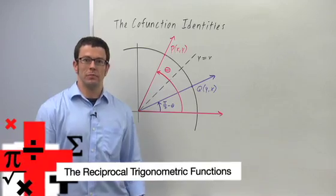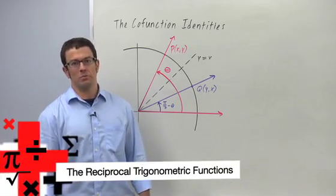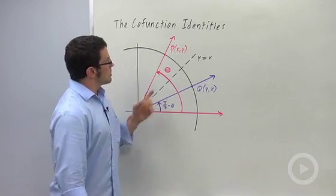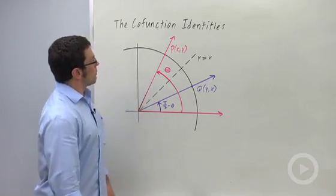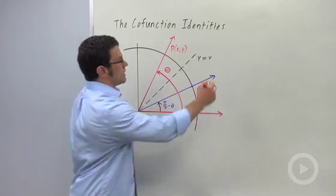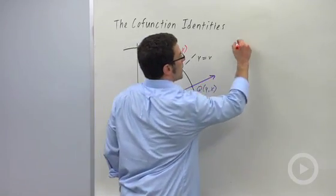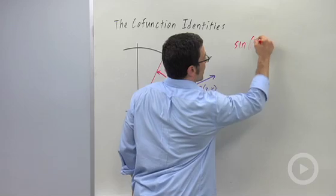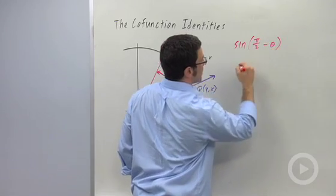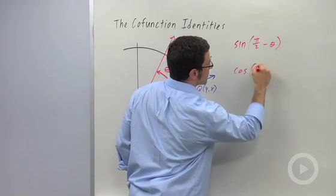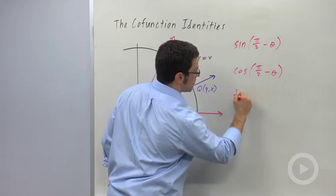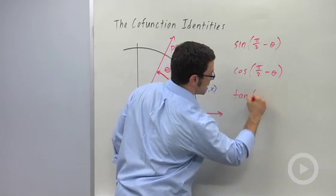I'm getting ready to graph the reciprocal trig functions, but before I do, I need to prove a couple of identities. First of all, the co-function identities. The co-function identities are identities for sine of pi over 2 minus theta, cosine of pi over 2 minus theta, and tangent of pi over 2 minus theta.